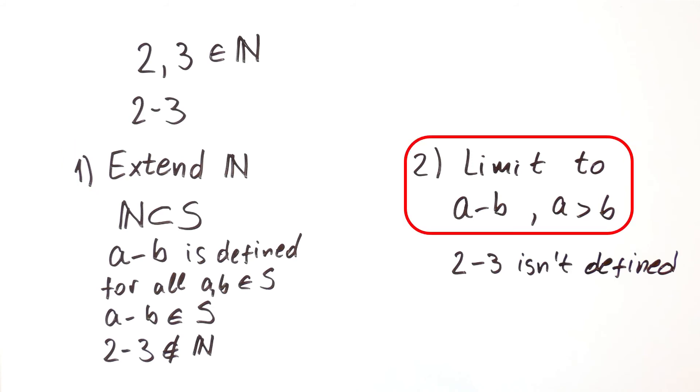Alternatively, we could limit ourselves to differences a minus b, where a is greater than b, but in that case, subtraction isn't an operation because not all combinations of natural numbers are allowed. For instance, when a is equal to 2 and b is equal to 3.